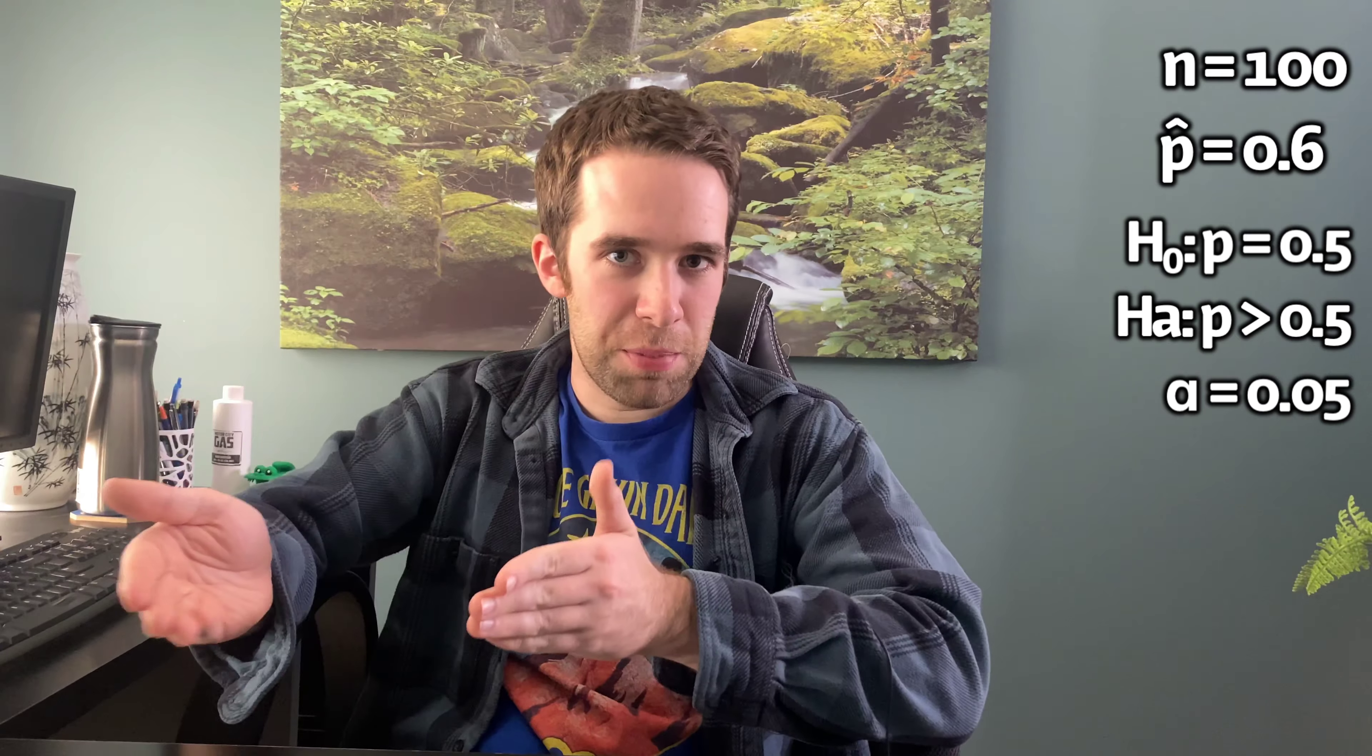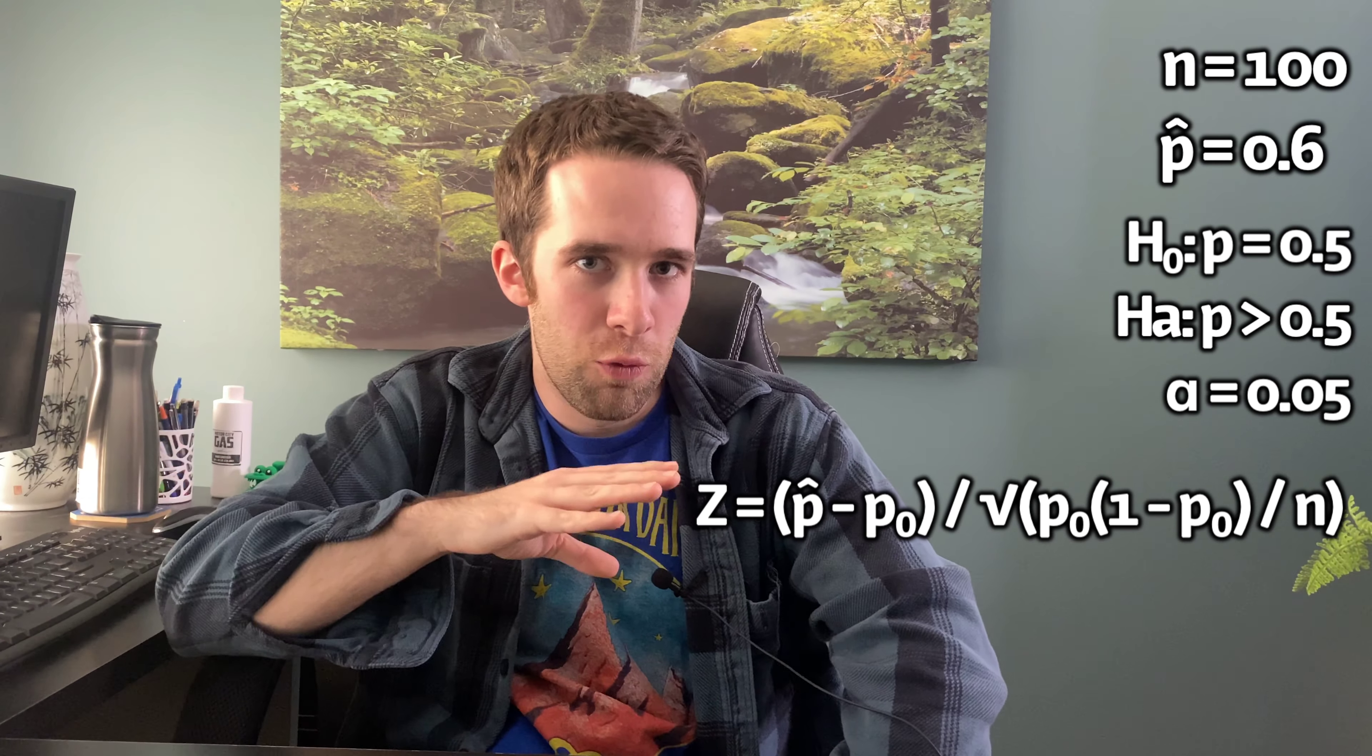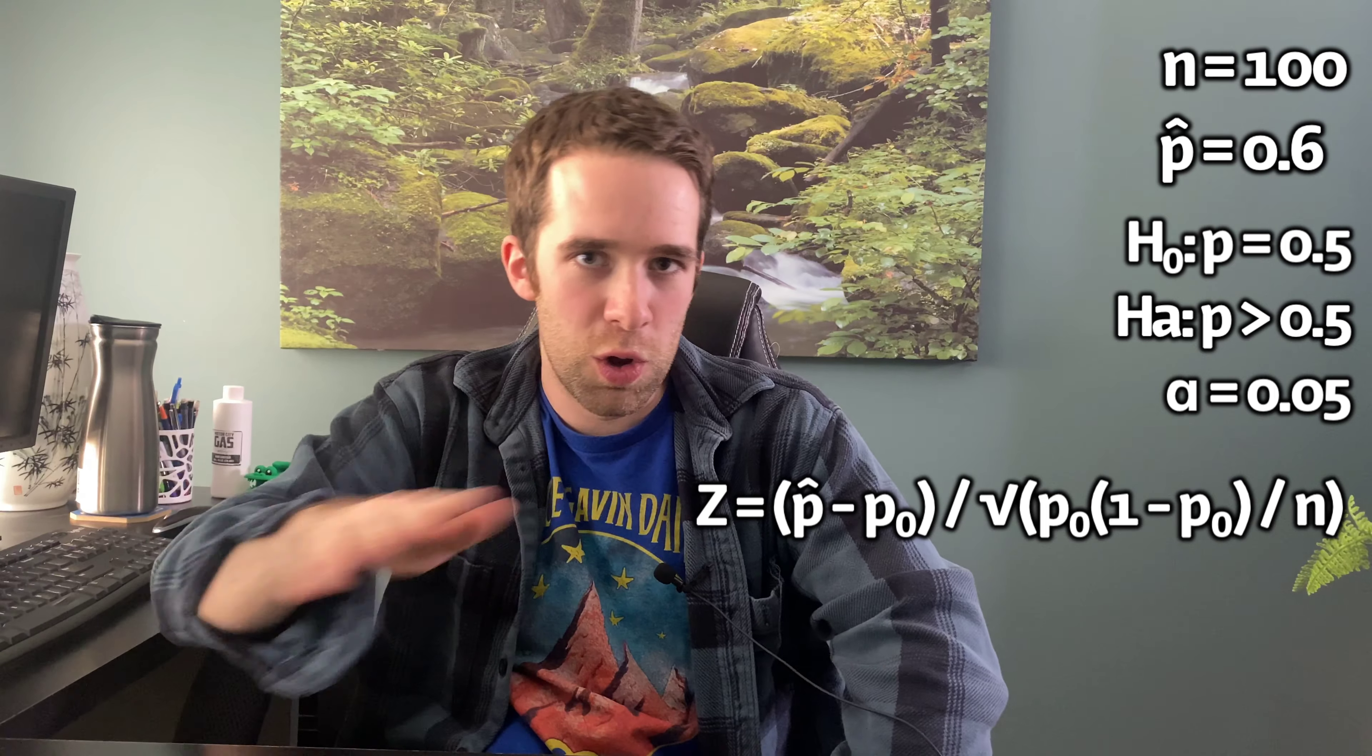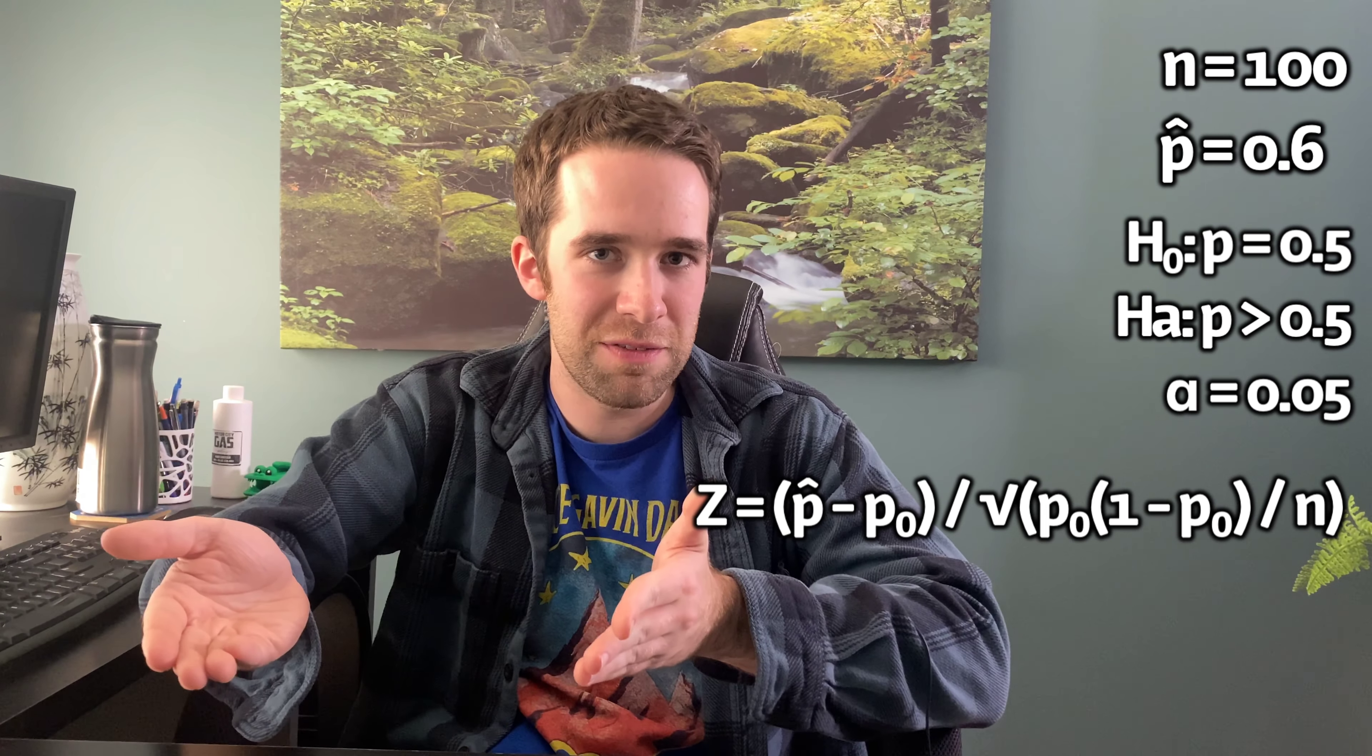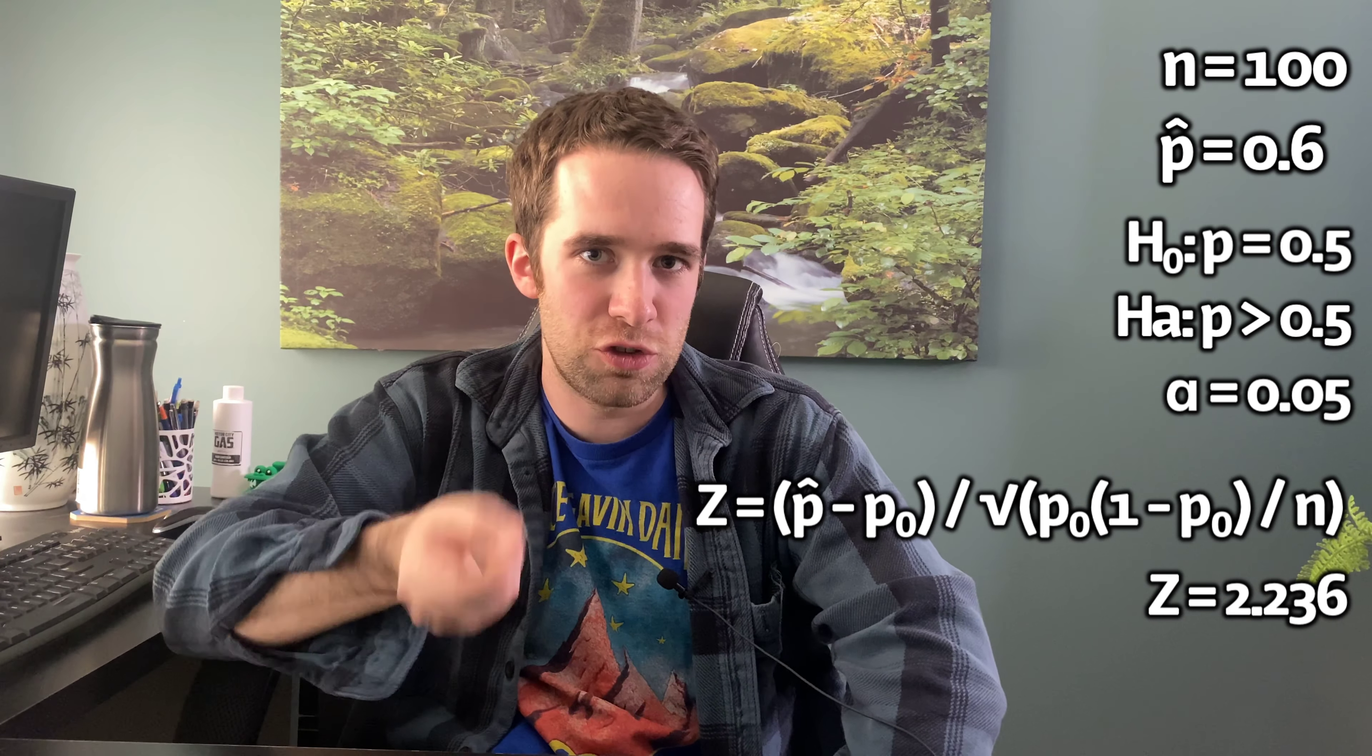And we use a 5% significance level. So, the test statistic here is Z equals P-hat minus P-naught over the square root of P-naught times 1 minus P-naught all over N, where P-naught is the null proportion, which is 0.5 here. Do the math here, and I get Z equals 2.236.